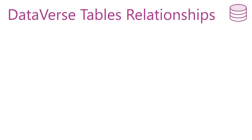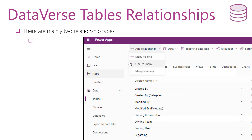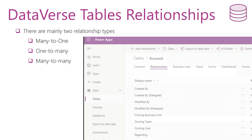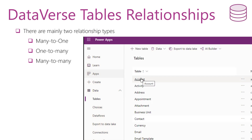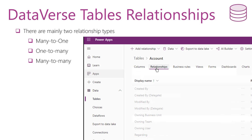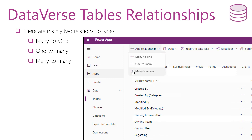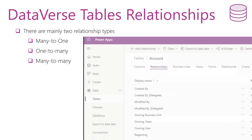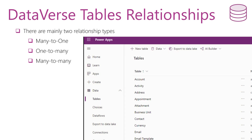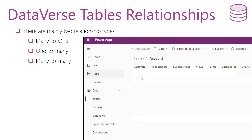Now let's talk about the relationships that we can find in dataverse tables. We will find three types of relationships: many-to-one, one-to-many, and many-to-many. In a many-to-one relationship, you will find many records associated with a single referenced table record. In a one-to-many relationship, you will find one record in the first table related to many records in the second table. In a many-to-many relationship, many table records can be associated with many other table records.